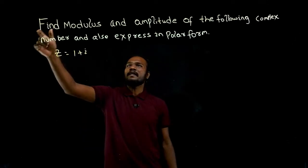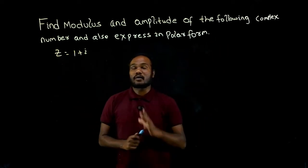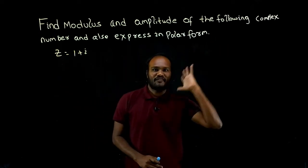What is given in the question? We have to find modulus and amplitude of the given complex number and also express it in polar form.